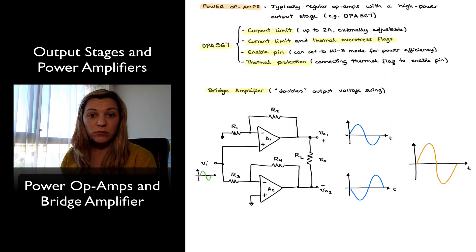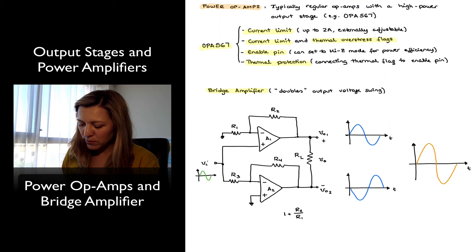Typically, these are set to have equal gains, so we will have that 1 plus R2 over R1 will be equal to R4 over R3, and let's say that's equal to K.